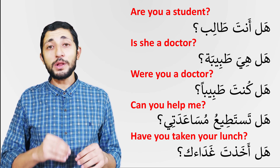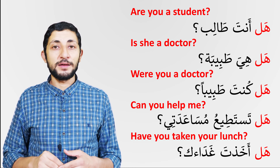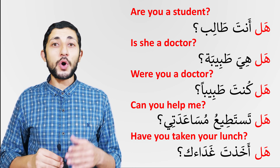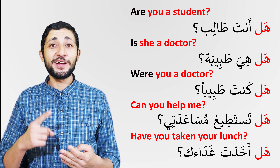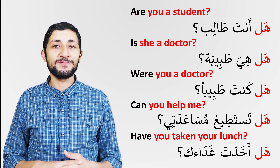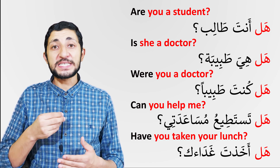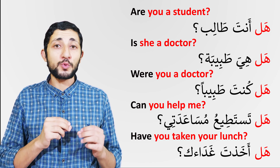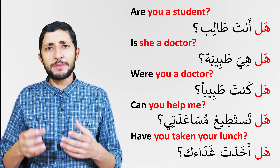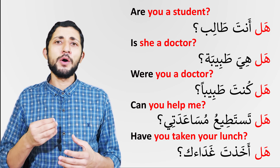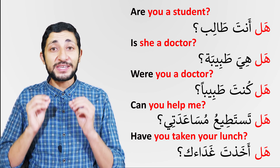As you can see, all Arabic questions start with هل, and this هل replaces all these verbs: are, is, were, can, and have. Simply put this preposition هل in front of any sentence and you will get a yes or no question. Of course, sometimes you will have to make some adjustments in conjugation or pronouns, but the order of the sentence remains the same.